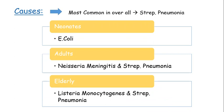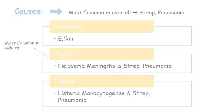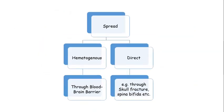Age-wise specific organisms include E. coli in neonates, Neisseria meningitidis as the most common organism in adults, and Listeria monocytogenes in the elderly.